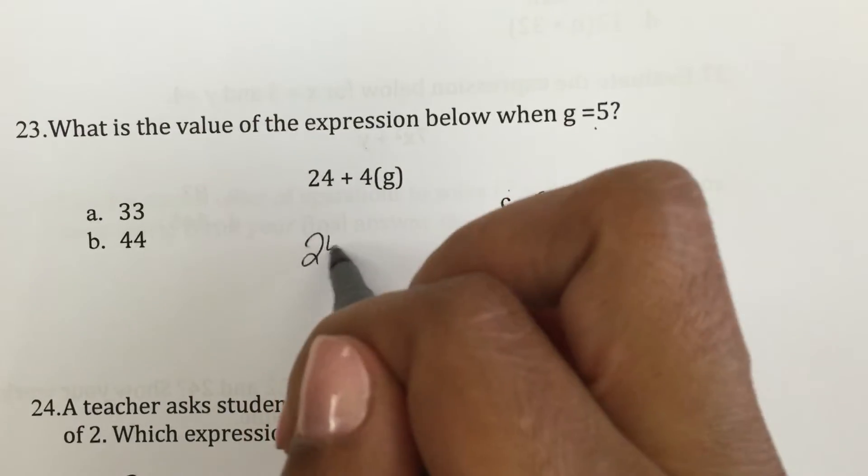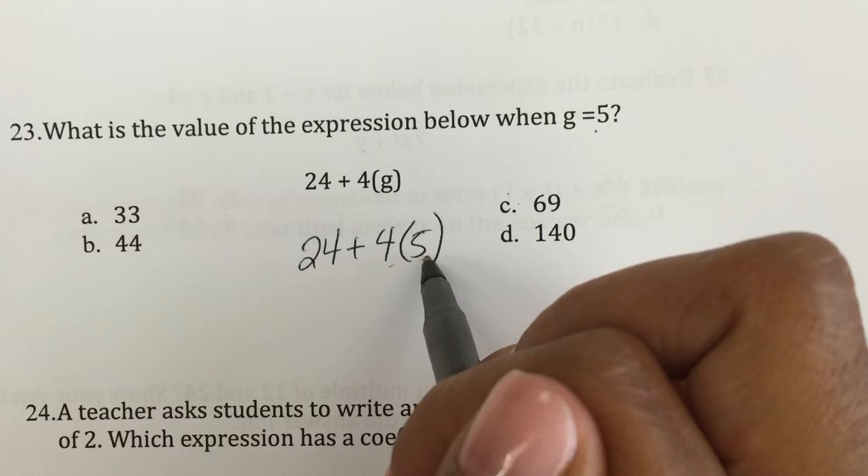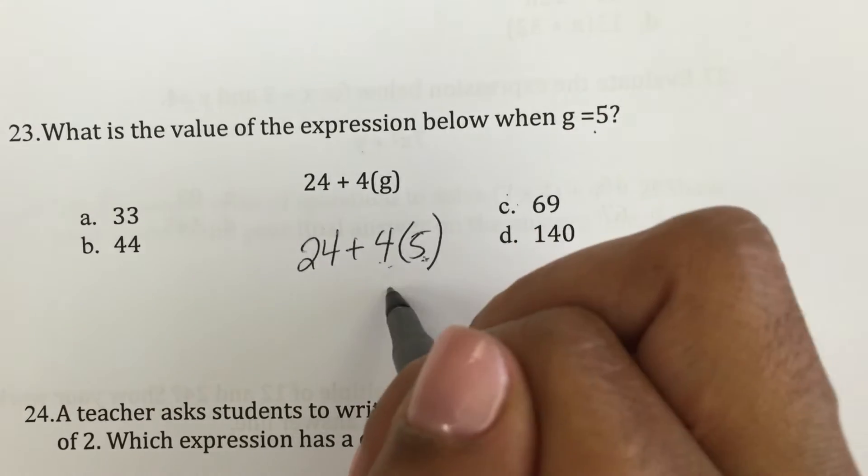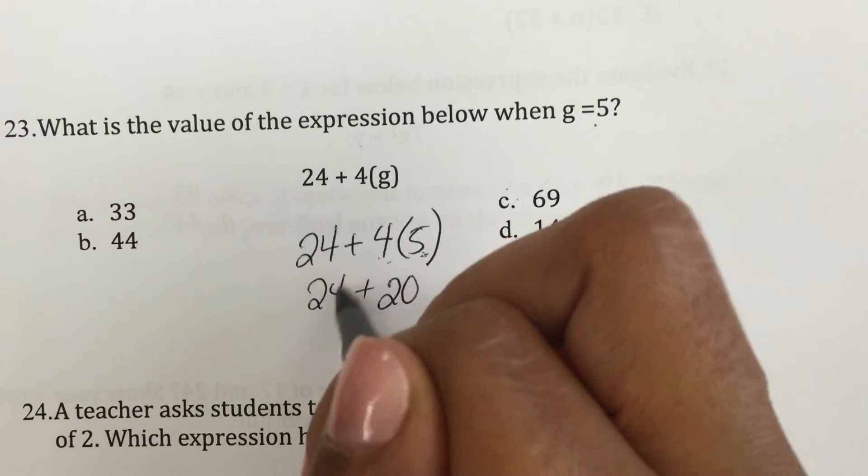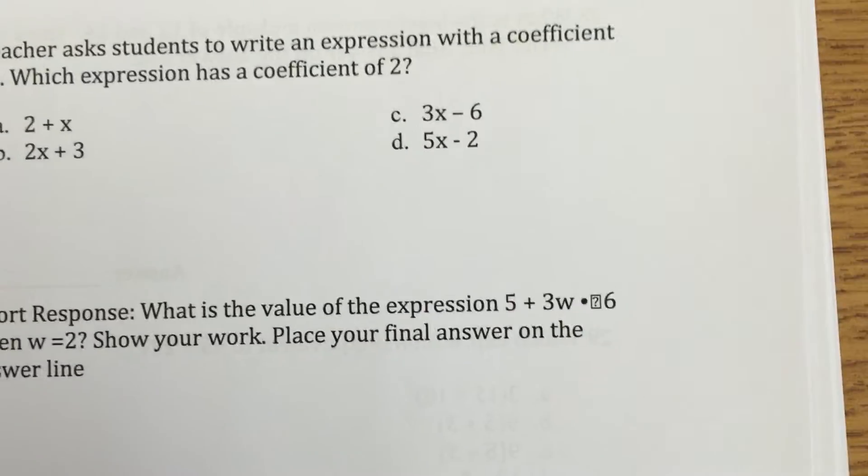So what do I do when g equals 5? 24 plus 4 times 5. It's still times. 4 times 5 is 20. 24 plus 20 is 44. Okay.